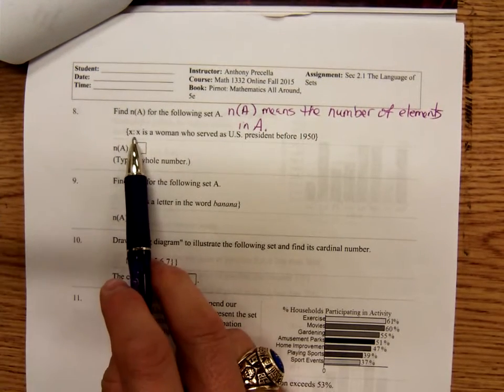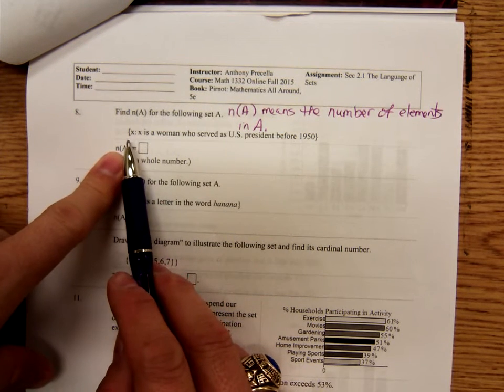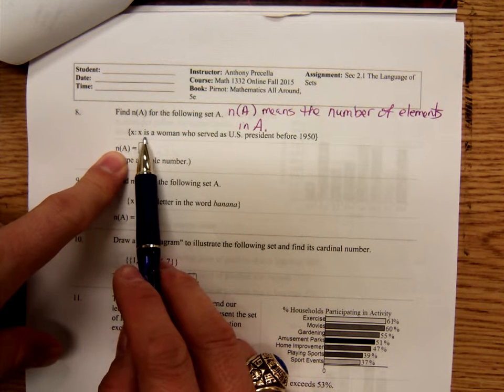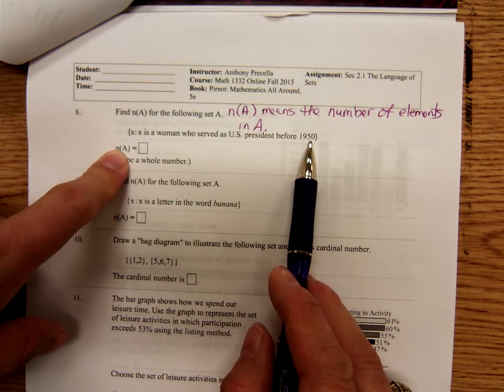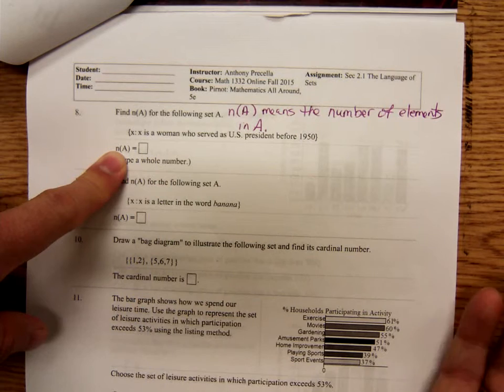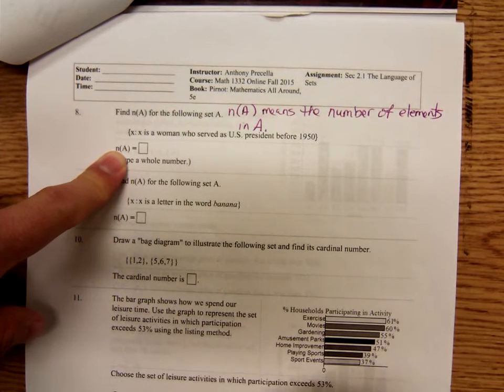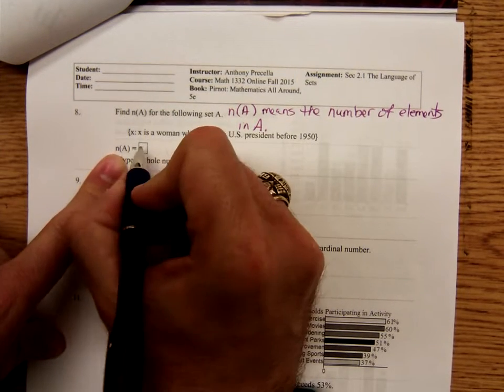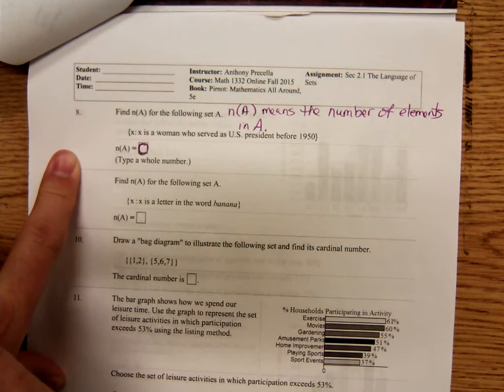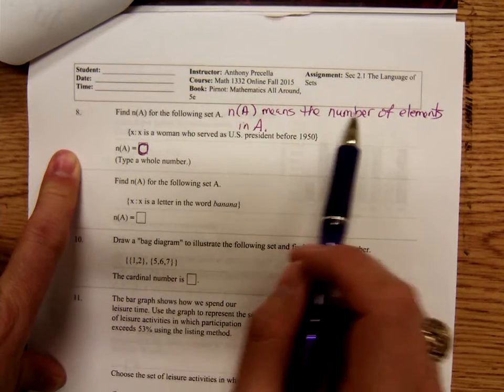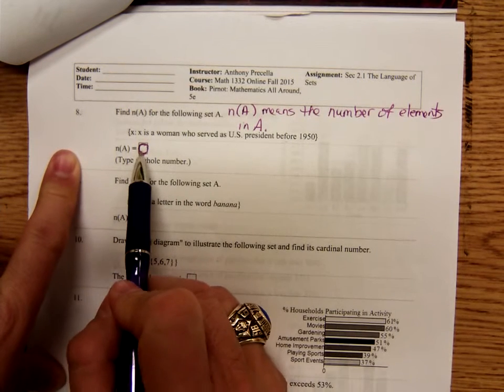So let's see. We're trying to figure how many elements are in this set. This is written in set builder notation. The set of all X such that X is a woman who served as US president before 1950. Well, that would be, have there been any, have there ever been any female presidents of the US? Well, at this point, as of this speaking, no. As of today, this is November the 12th, 2015 right now. So certainly before 1950, there weren't any. So how many elements are in the set zero?